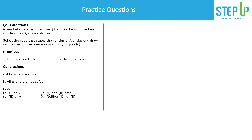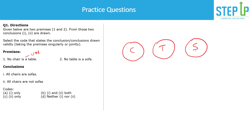Let's solve a few questions. The first says 'no chair is a table' — this is a universal negative statement, so there is only one possibility: two disjoint circles. The second statement 'no table is a sofa' has multiple cases: sofa can be placed in various positions relative to the table and chair circles. We look at all possible cases and then think about the conclusions.